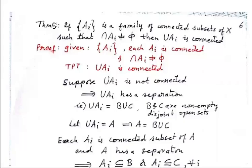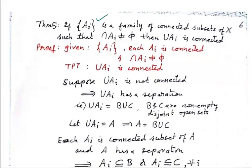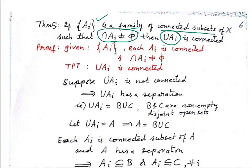Let us prove Theorem 5 on connected spaces, which states that if {Aᵢ} is a family of connected subsets of a topological space X, such that the intersection of any number of the Aᵢ is not null, then we have to prove that the union of all those Aᵢ is connected.